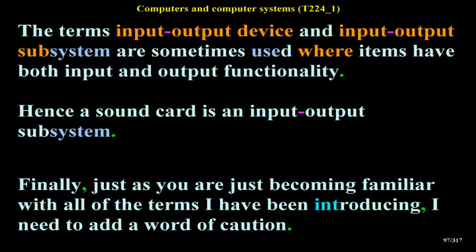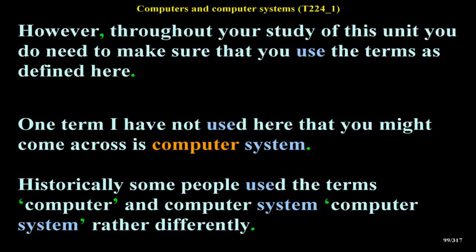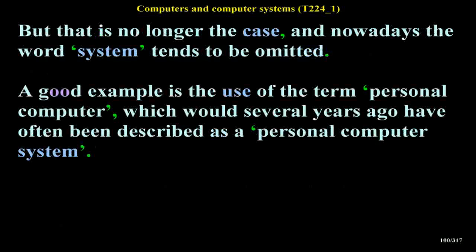A word of caution: when you read books or other literature about computers you may find some of the terms defined here used differently. This is common when technical terms become part of everyday language. Throughout your study of this unit you must use the terms as defined here. One term you might come across is 'computer system' — historically used differently from 'computer,' but that is no longer the case, and nowadays the word 'system' tends to be omitted. A good example is the term 'personal computer,' which would several years ago have often been described as a 'personal computer system.'